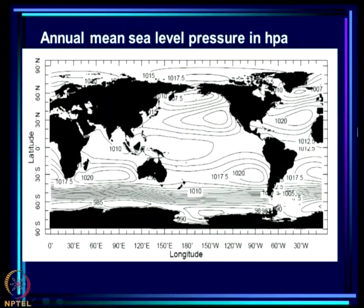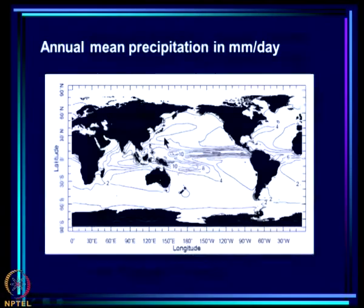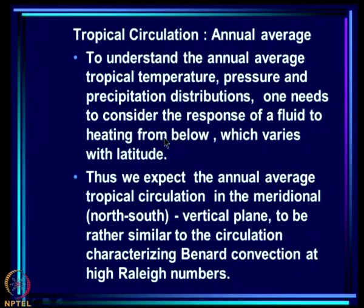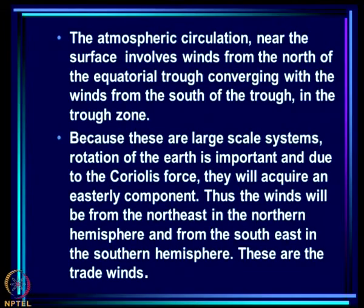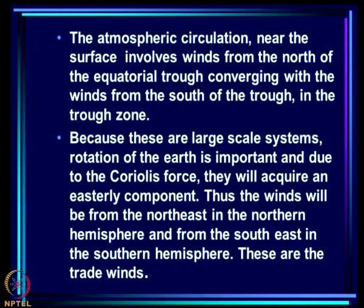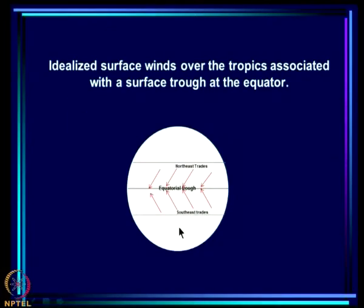We are looking at a very large scale system extending over thousands of kilometers, so Coriolis force becomes important. Because these are large-scale systems, the rotation of the earth is important. Due to the Coriolis force, both the northerly winds in the northern hemisphere and the southerly winds in the southern hemisphere will acquire an easterly component — thus winds will be from the northeast in the northern hemisphere and from the southeast in the southern hemisphere.